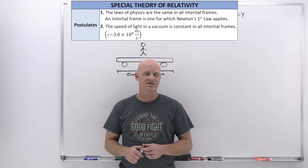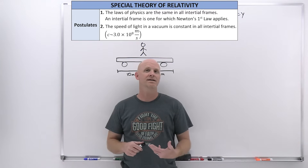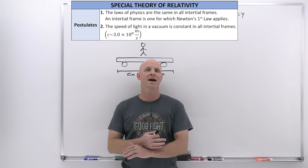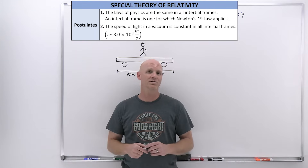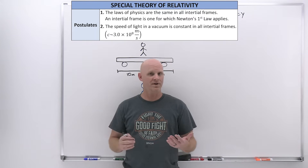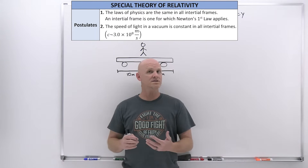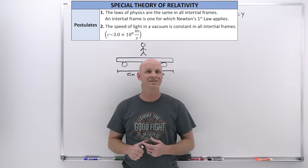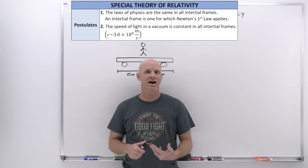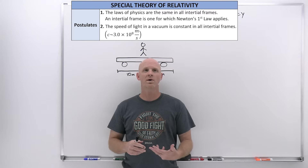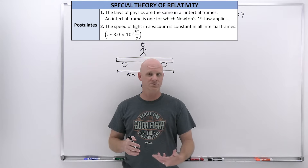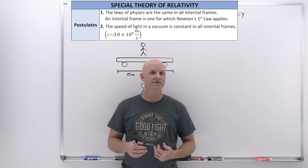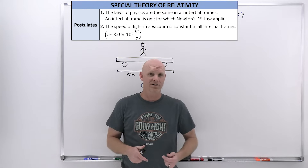The second postulate is that the speed of light in a vacuum is constant — the same value in any inertial frame of reference. The value we use is 3.0 × 10⁸ meters per second. That is the speed of light in a vacuum for any observer, whether the observer or the source of light are moving or not.